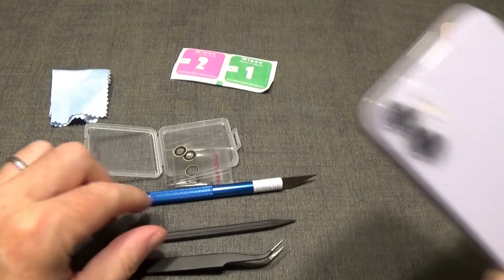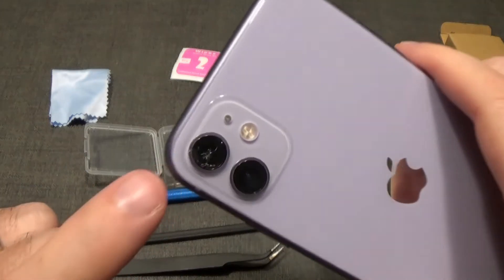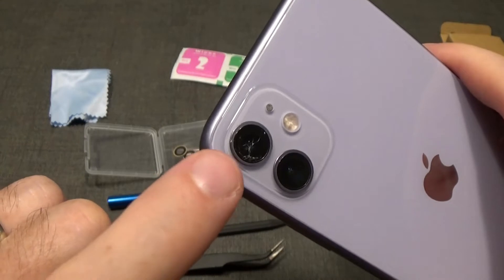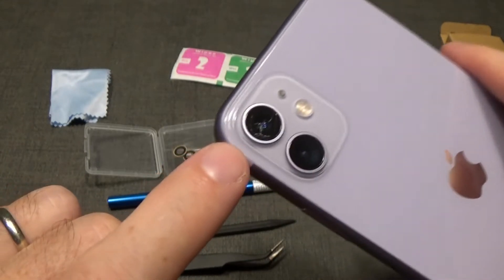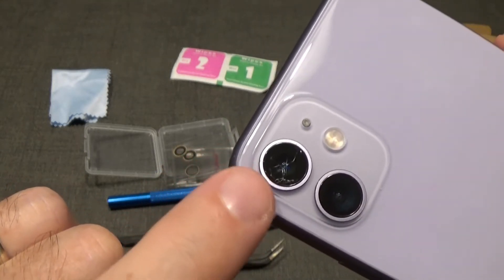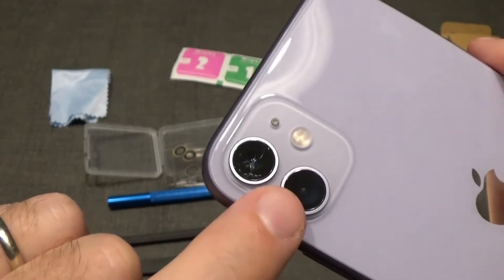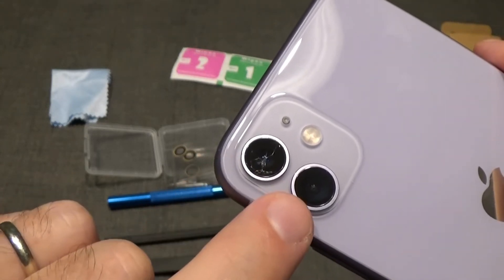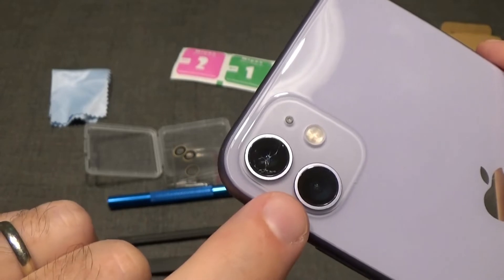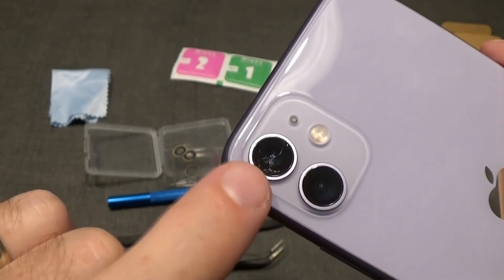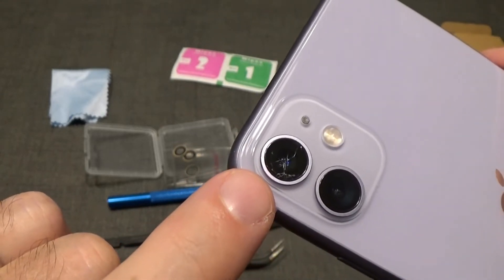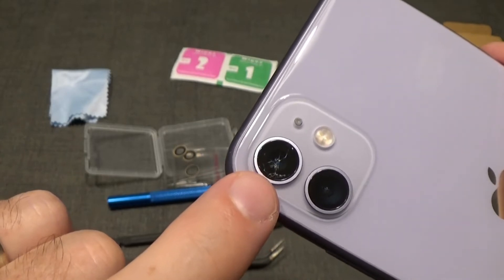One thing I want to say when you are doing this with your iPhone is make sure that you do not touch the lens underneath if you can avoid it. There's a glass cover, then underneath there's a lens. We're only touching the glass on this one which is broken, but we do not want to touch the lens underneath which is perfectly good, which is why we're just replacing the glass.